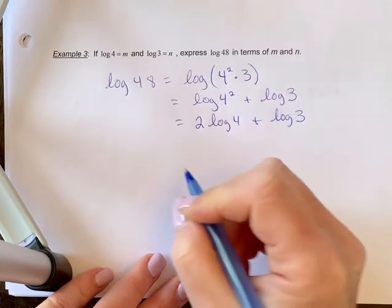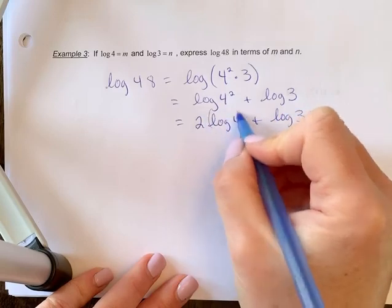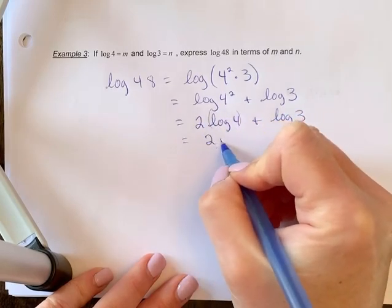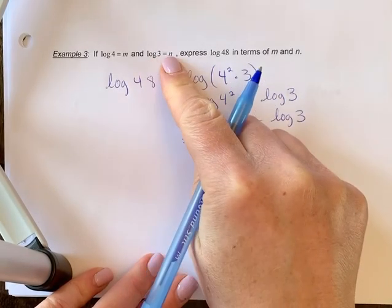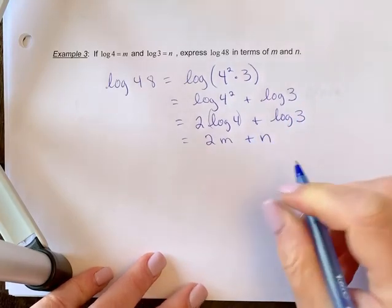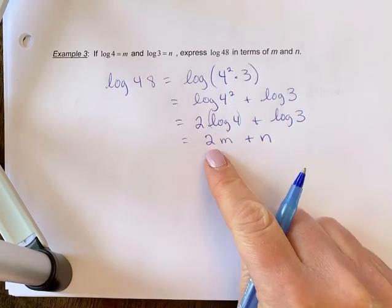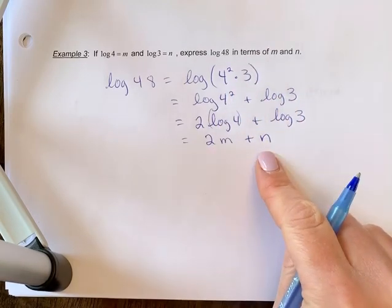Now the question says write this in terms of m. Well, if log 4 is m, I'm going to replace this log 4 with the variable m. And log 3 represents n, so I'm going to replace that with n. My answer is log 48 in terms of m and n equals 2m plus n.